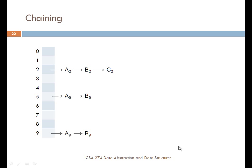Here's a diagram that shows chaining. If I have three elements, a2, b2, and c2, all of which hash to location 2 in the array, then I will use a linked list to store all of those elements at that location. Same thing goes with elements that map to location 5 and location 9 and so forth.